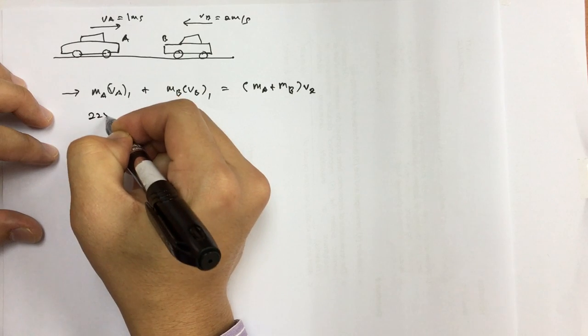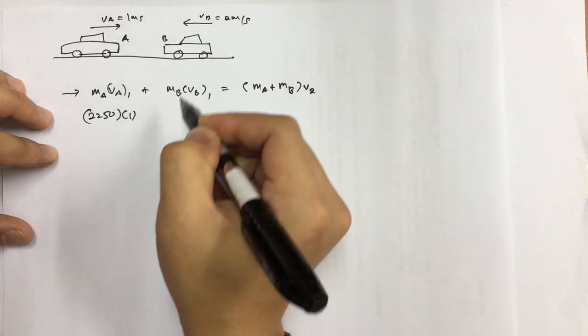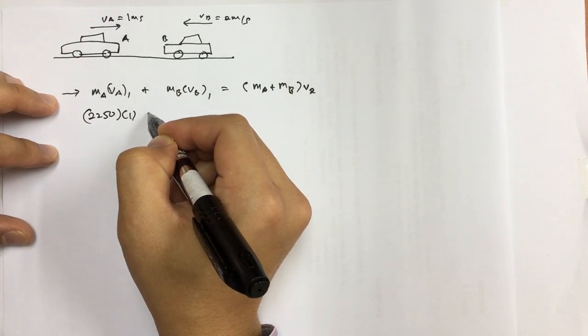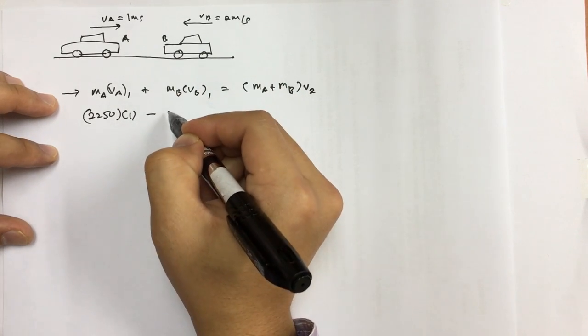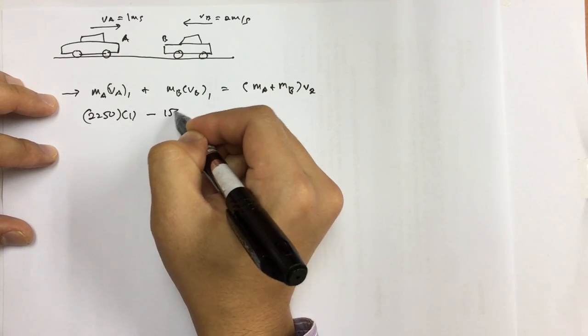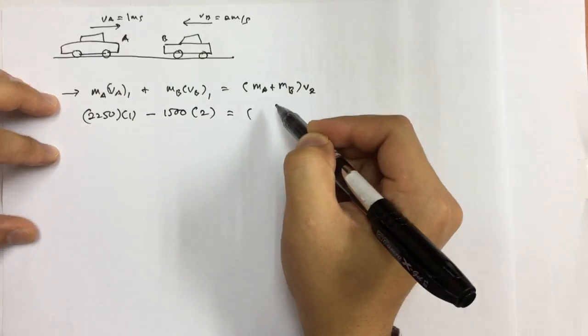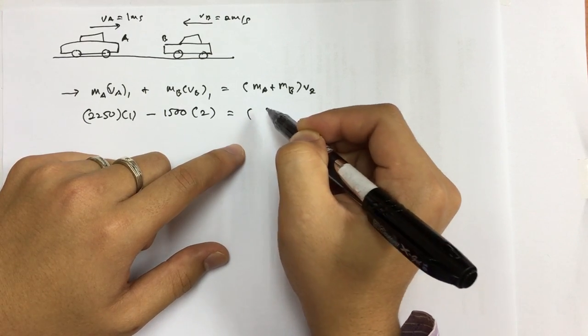So MA is 2250, the velocity of A is 1, and going to the right is positive. Car B is going to be moving to the left, which is negative, and MB equals 1500, VB equals 2. And then both masses are going to get together, so we have this.